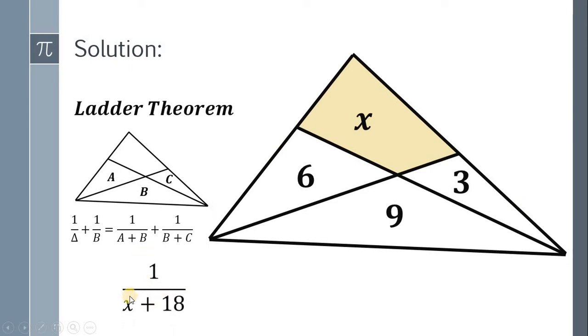We have 1 over the total area of the triangle. We have 6 plus 9 plus 3, or simply 18, and x, so we have x plus 18. Plus we have 1 over b, or simply 1 over 9, is equal to 1 over 9 plus 6, or simply 15, plus 1 over 9 plus 3, or simply 12.